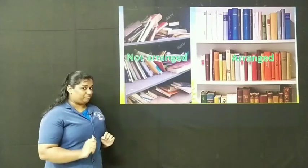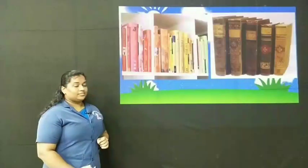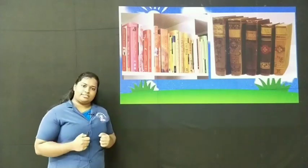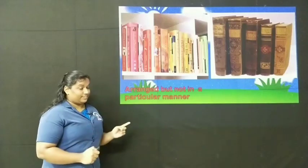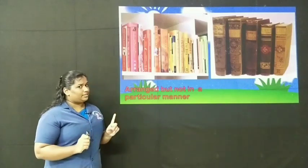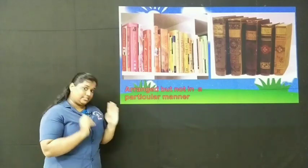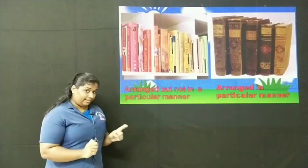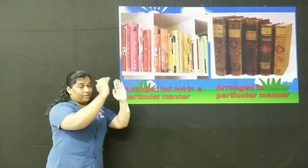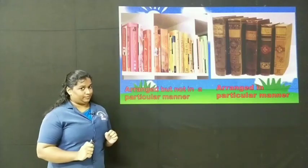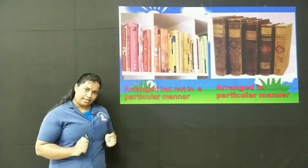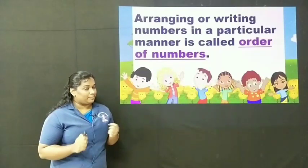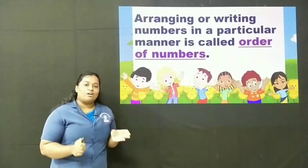Now, see one more set of pictures. Are the books arranged? Yes, they are arranged. Then what is the difference? In the first, the books are arranged but there is no particular manner — bigger and smaller books are kept together. Whereas in the second picture, books are arranged in a particular manner, from the biggest book to the smallest book. Can we arrange numbers in a particular manner? Yes, we can arrange or write the numbers in a particular manner, and that is called order of number.